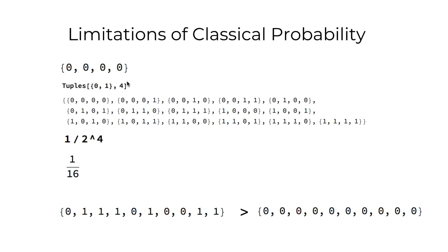In this case, there are 16 possible sequences of length 4, so the probability of each of them is 1 over 16.